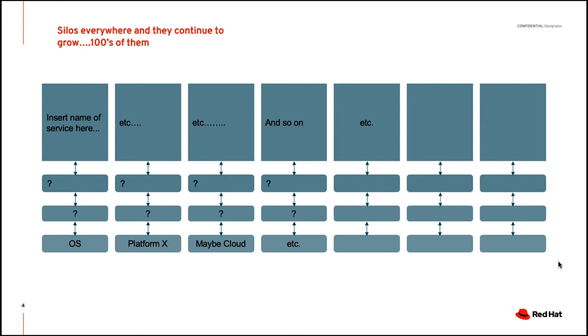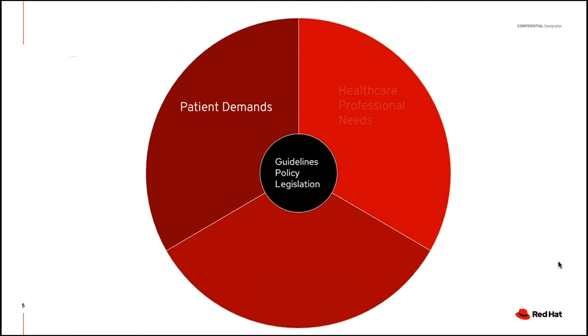We have 500-plus applications in an average hospital — I know hospitals with over a thousand applications and services. What becomes more important is that middle and bottom layer: the platforms we put these on. Clinicians should still be free to choose the best and most innovative services, yet IT departments and business management within hospitals need a way of supporting that desire. That brings us to the infrastructure layer — technology infrastructure is the key that will support the needs of healthcare professionals and the demands of patients.